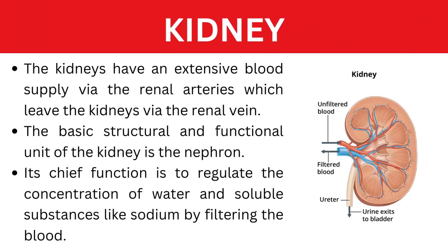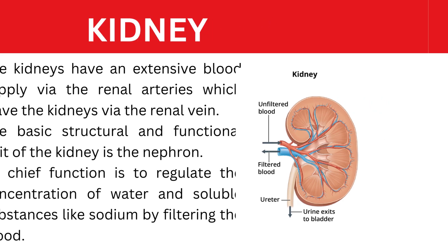The first part of the urinary system is the kidneys, which have an extensive blood supply via the renal arteries, which leave the kidneys via the renal vein. The basic structural and functional unit of the kidney is the nephron. Its chief function is to regulate the concentration of water and soluble substances like sodium by filtering the blood.